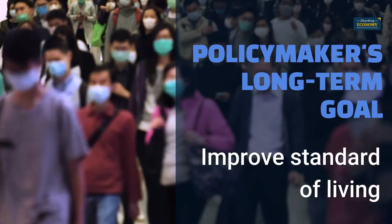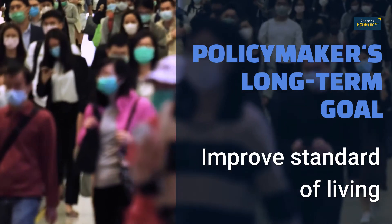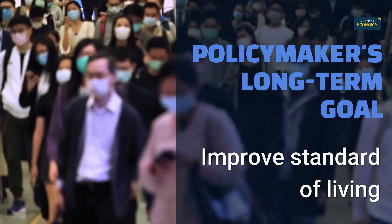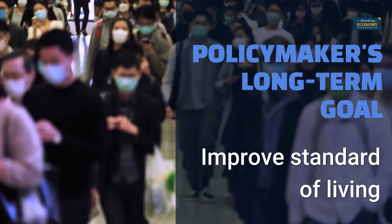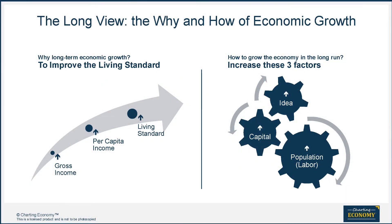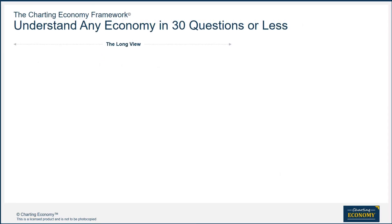Economic policymakers' long-term goal is to improve the country's standard of living and its population's well-being. Without economic growth, the standard of living does not improve, as had been the case in most countries before the Industrial Revolution. So, how do you make the economy grow in the long run? A simple formula for long-term economic growth dictates that you have to increase these three factors: labor, capital, and idea. That's the job of policymakers. As spectators, we can ask questions that give us clues to assess those three factors and the results on people's well-being.